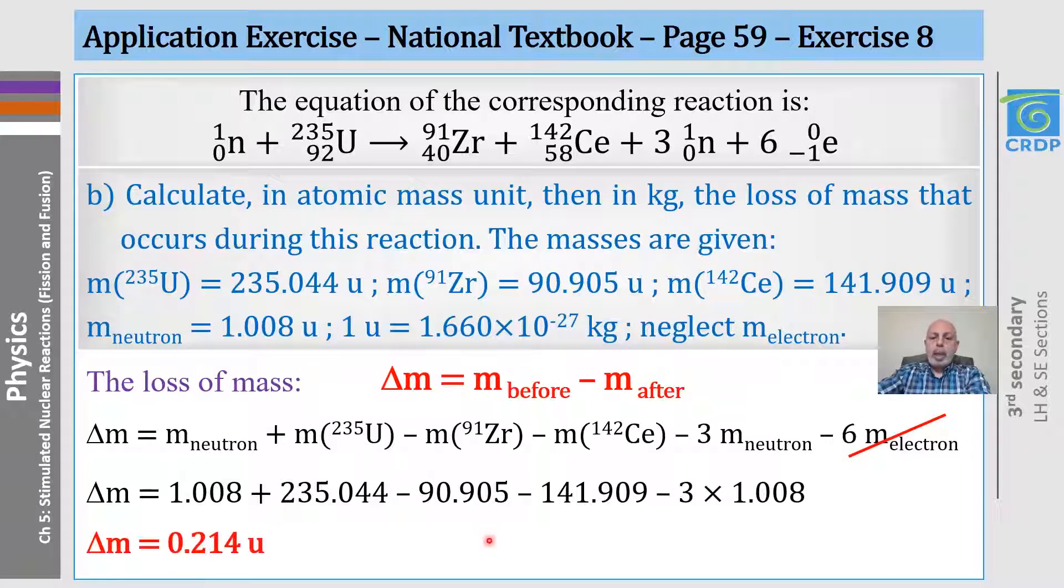And we calculate delta M, and this is what we get in atomic mass unit. To convert it to kilogram, we use what's given here. And by multiplying, this is what we get.